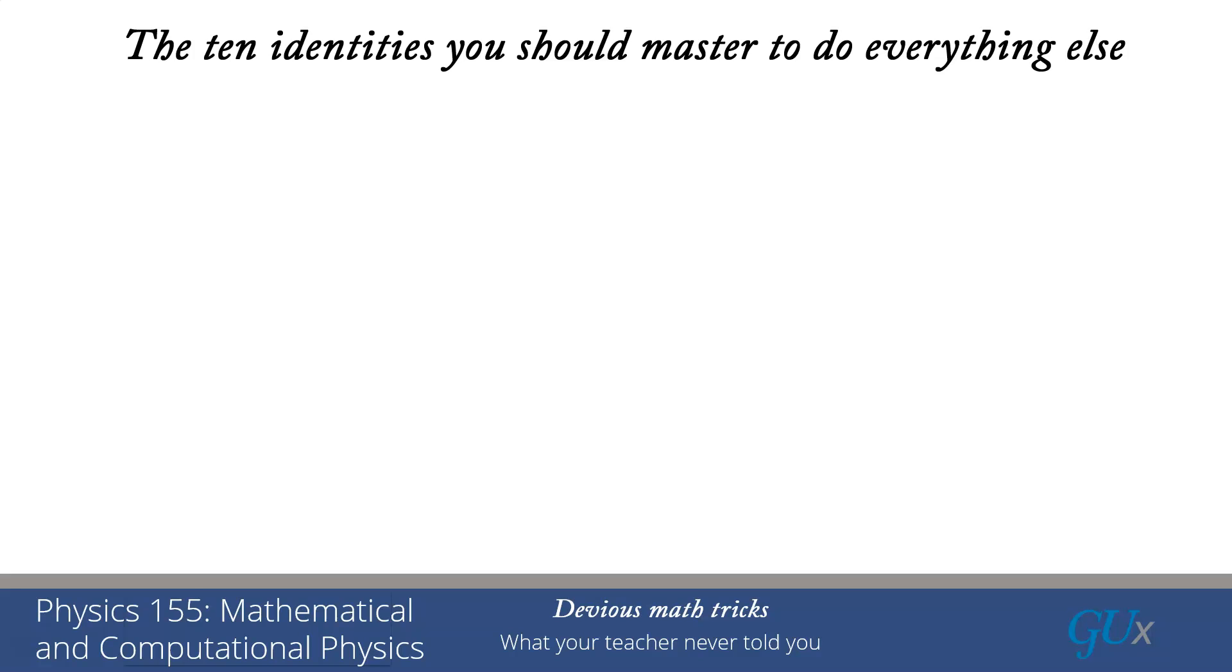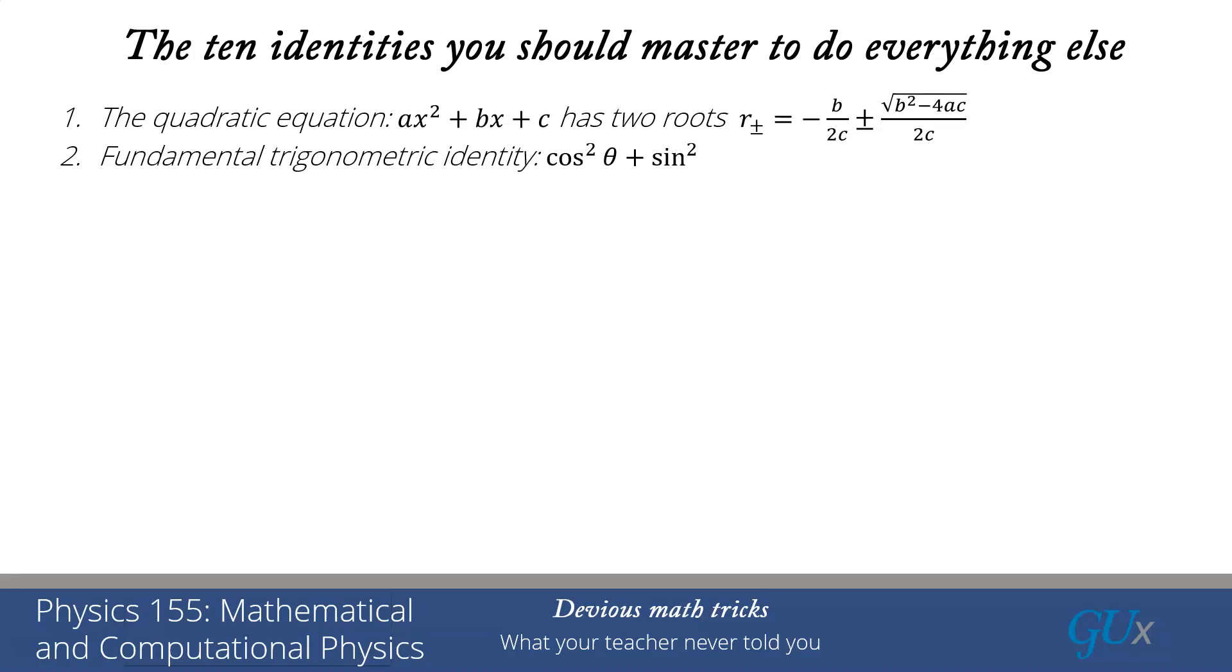I promised you 10 identities that you need to master to do anything else. This is my big top 10 list. The first one is the quadratic equation. ax² + bx + c has two roots: r± = -b/(2c) ± √(b² - 4ac)/(2c), a really important identity that you should memorize and remember. The fundamental trigonometric identity, we already encountered this: cos²θ + sin²θ = 1. Remembering the trigonometric definitions: secθ = 1/cosθ, tanθ = sinθ/cosθ, cscθ = 1/sinθ, and cotθ = cosθ/sinθ. Those are the four identities or trig definitions you need to remember.